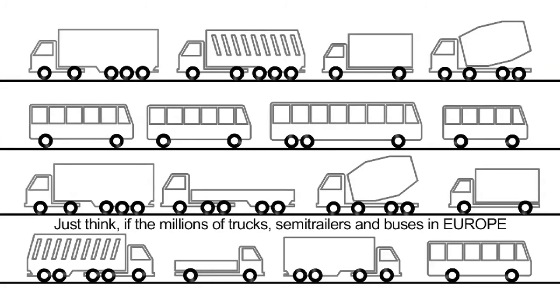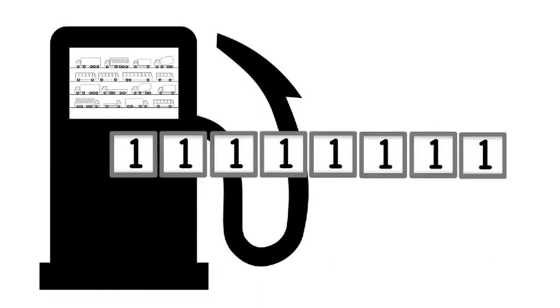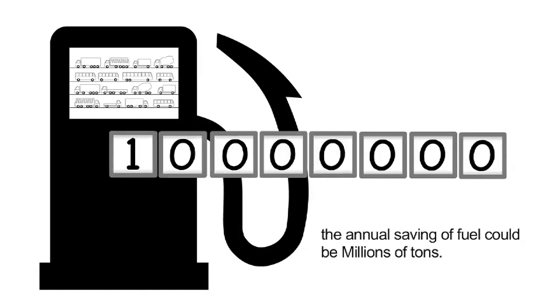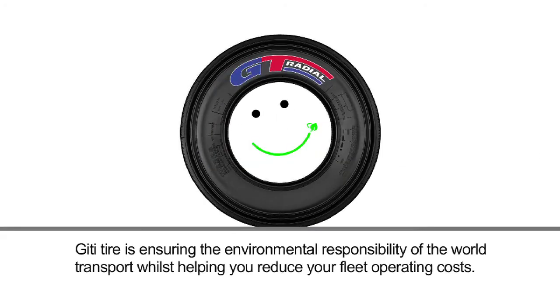Just think, if the millions of trucks and semi-trailers and buses in Europe were equipped with low rolling resistance tires and correctly maintained, the annual savings of fuel could be at least millions of tons. GT Tire is ensuring the environmental responsibility of the world of transport whilst helping you reduce your fleet operating costs.